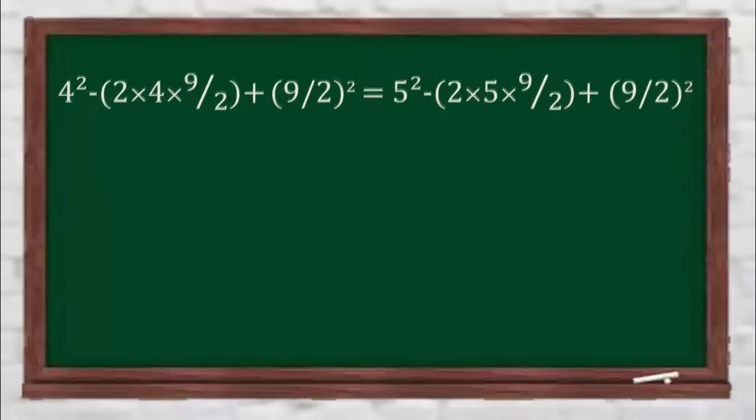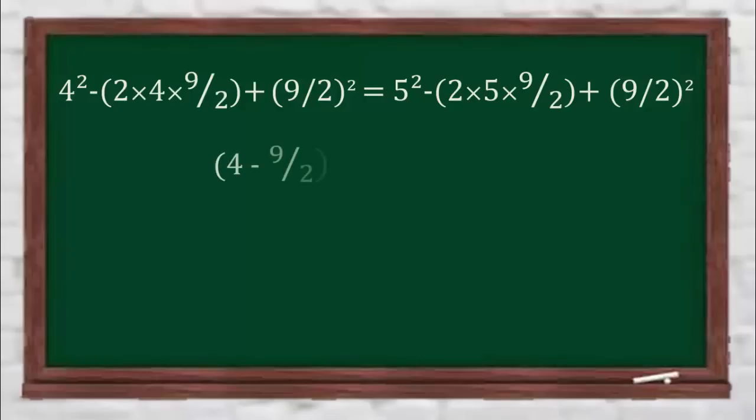On the left hand side, we have 4 square minus 2 times 4 multiplied by 9 by 2 plus 9 by 2 whole square, which is in the form of a square minus 2ab plus b square. And that's equal to a minus b whole square. That is 4 minus 9 by 2 whole square.